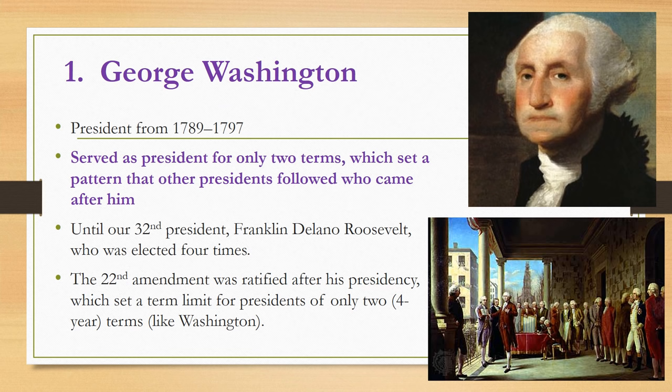The first president is George Washington. George Washington was our first elected president and he was not part of a political party when he ran for president. He was president from 1789 to 1797, and he served as president for only two terms, each term being four years, which set a pattern that other presidents followed after him.